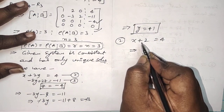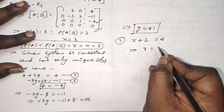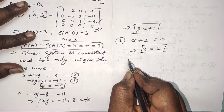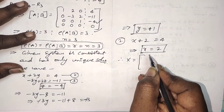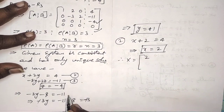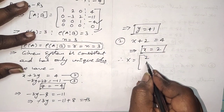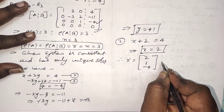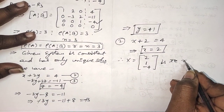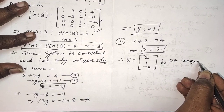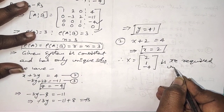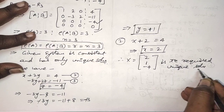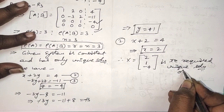Now substitute Y = 1 into the first equation: X + 2(1) = 4, so X + 2 = 4, therefore X = 2. Finally, the unique solution is X = 2, Y = 1, Z = minus 4. This is the required unique solution of the given system.